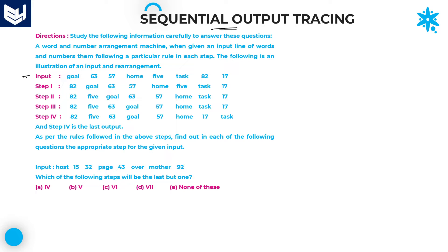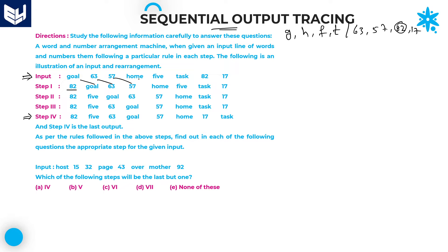Now see the input which is provided in the question. This is the input and this is the final output. The input is provided with letters G, G, H, F, T and numbers 63, 57, 82, 17. In step 1, what he is doing is initially writing 82 first — 82 is in first position and the remaining 63, 57 follow in the same order. There is no change, but first he is writing 82.